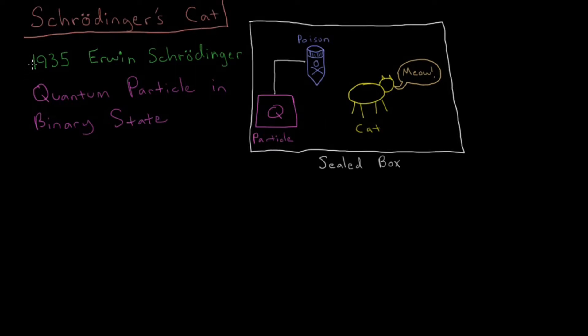So this experiment is called Schrödinger's Cat. This was thought up in 1935 by Erwin Schrödinger. Schrödinger thought up this experiment to really show that the Copenhagen interpretation, the standard view of quantum mechanics, gave you some consequences which would just be completely ridiculous for macroscopic objects.